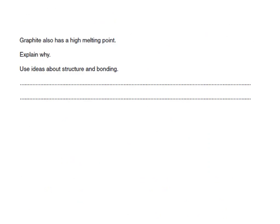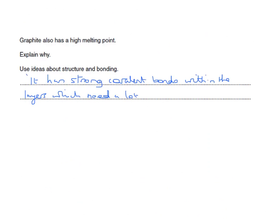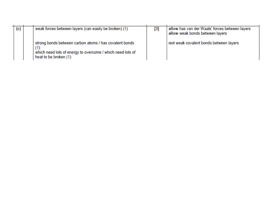Graphite has a high melting point — explain why using ideas about structure and bonding. It has strong covalent bonds within the layers which need a lot of heat energy to break them. And again, here are the answers from the mark scheme.